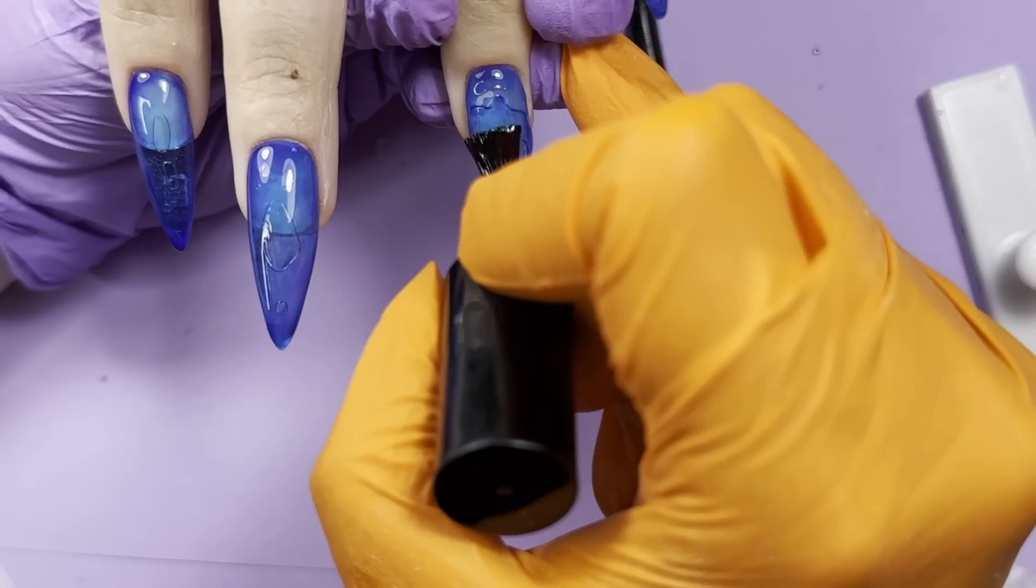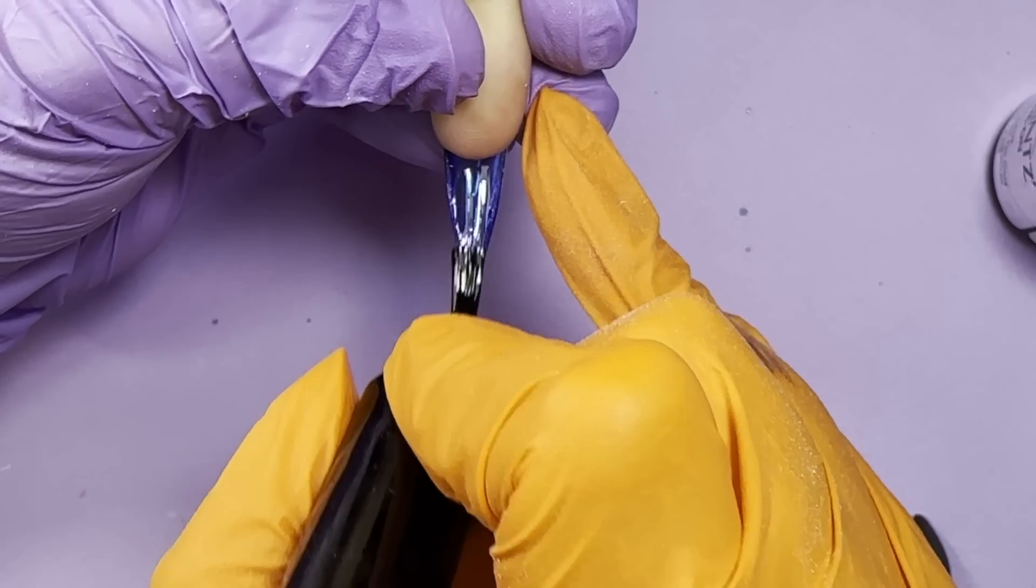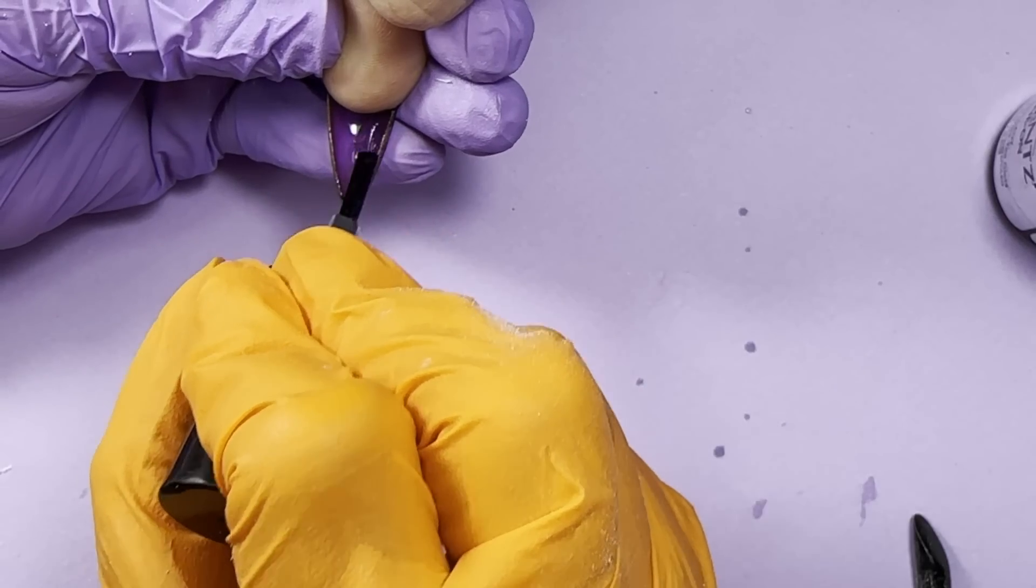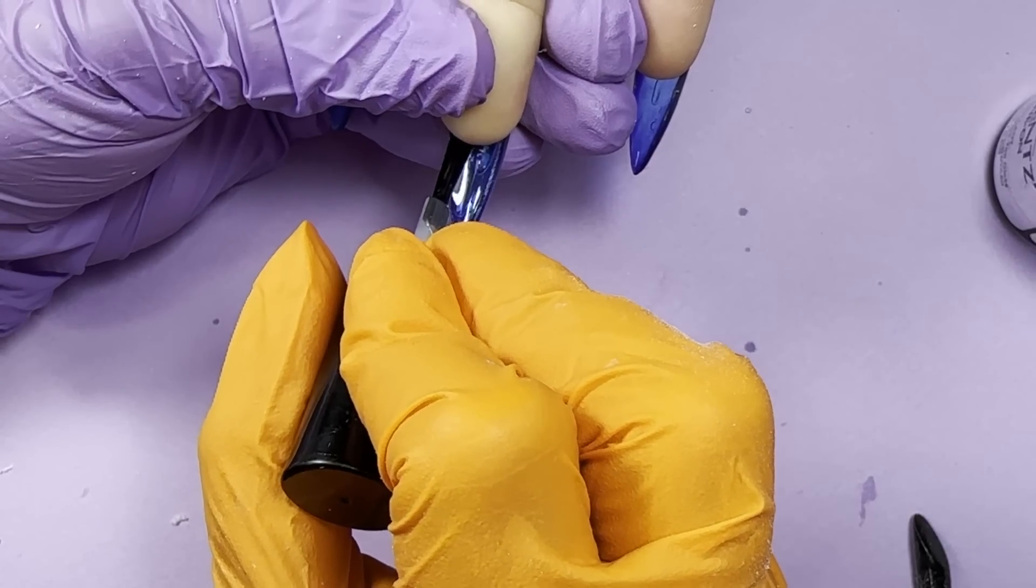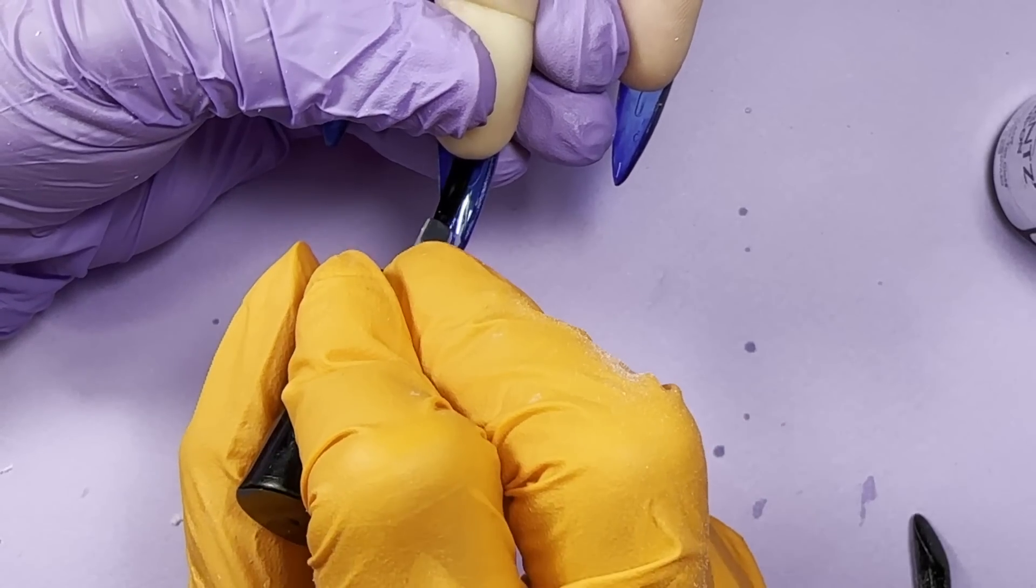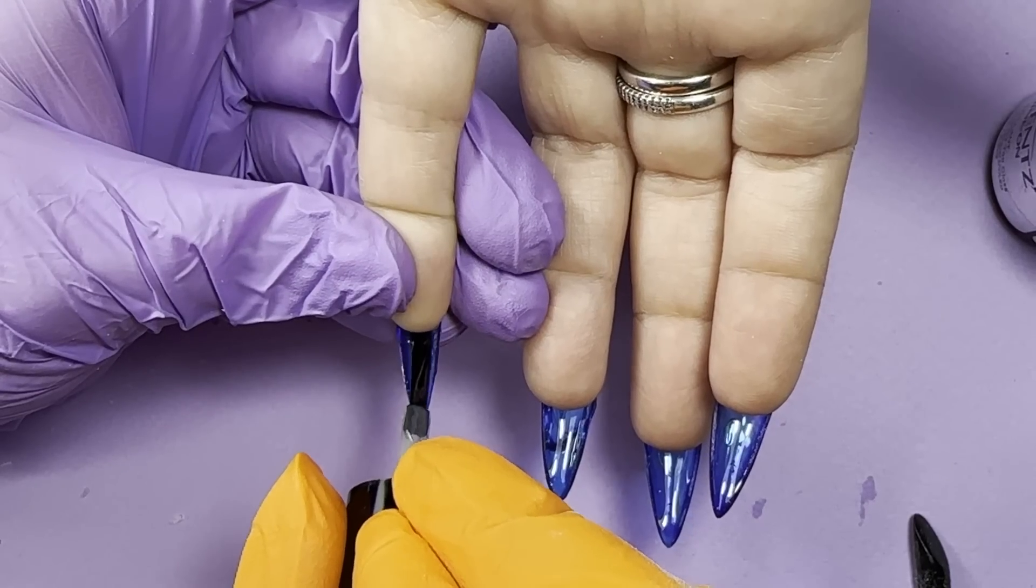And of course, we are going to seal them from the top. So we have one hand that is blue color, and another one is like magenta purple. At the beginning, I thought that only blue color is going to be suitable for this design, because it looks like water, but at the end, I loved the second hand as well.